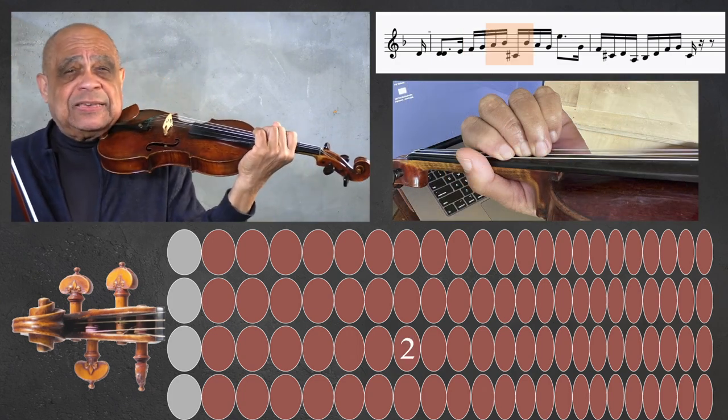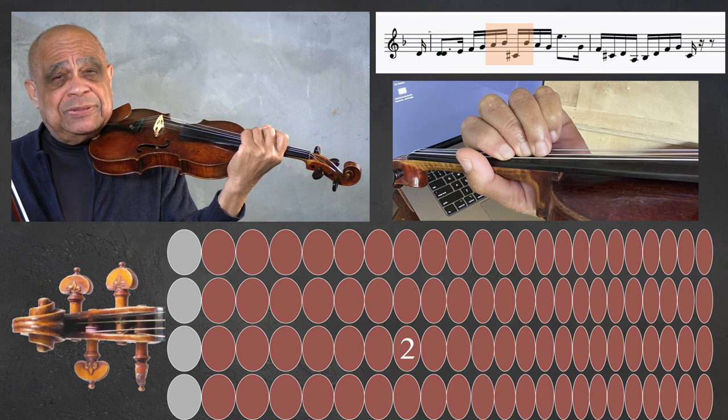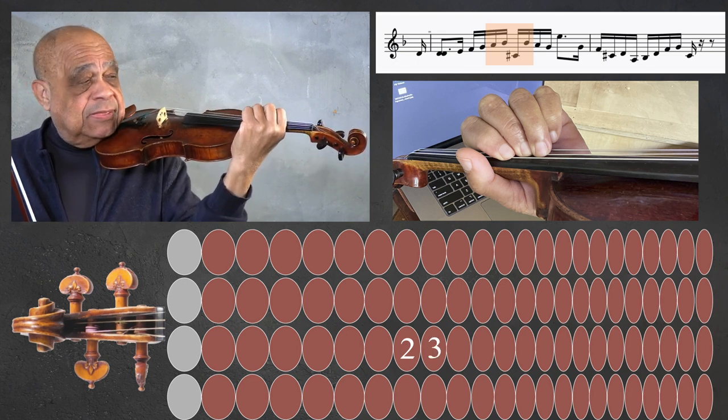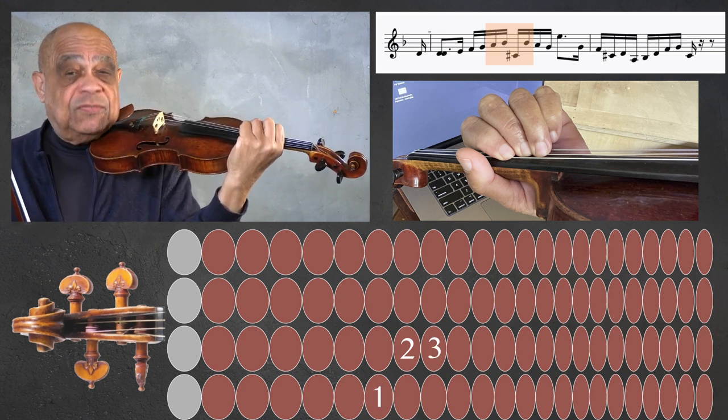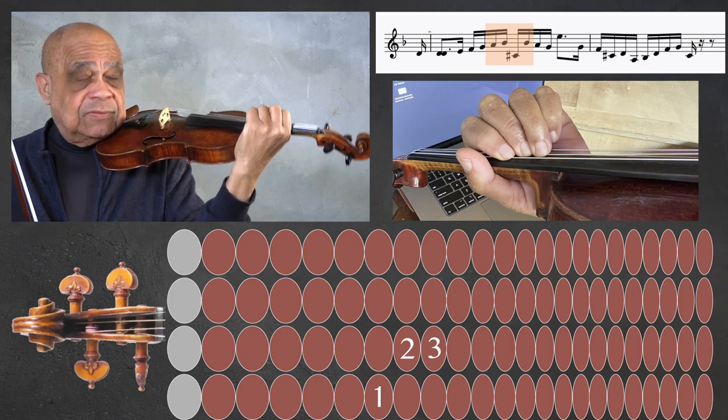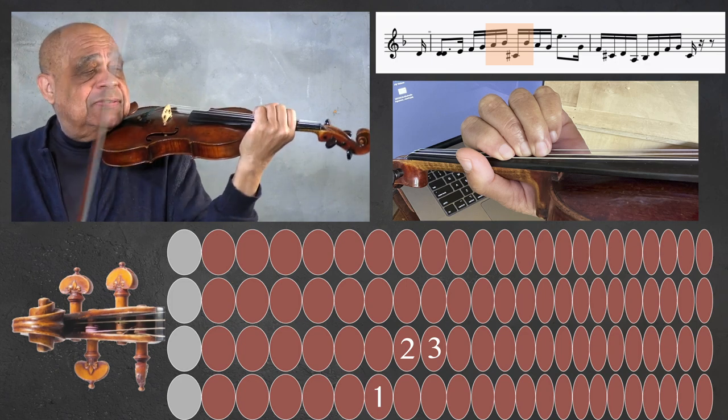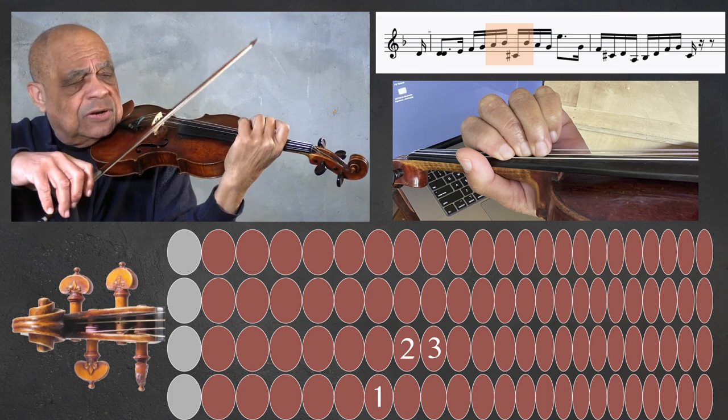Next, keep the second finger A down when playing the third finger B flat, and then the C sharp first finger. You'll see it's all about half steps. Let's start it.